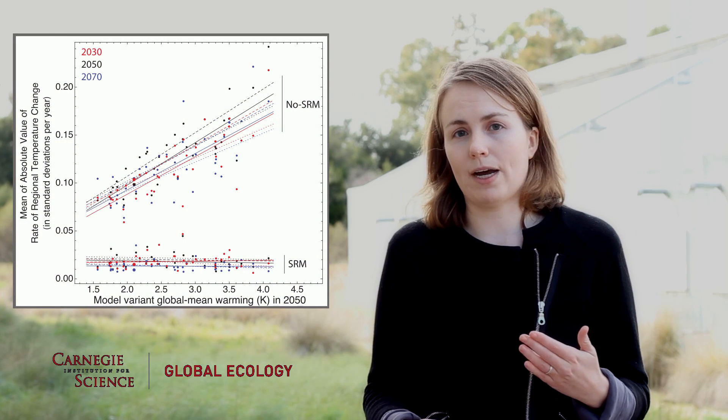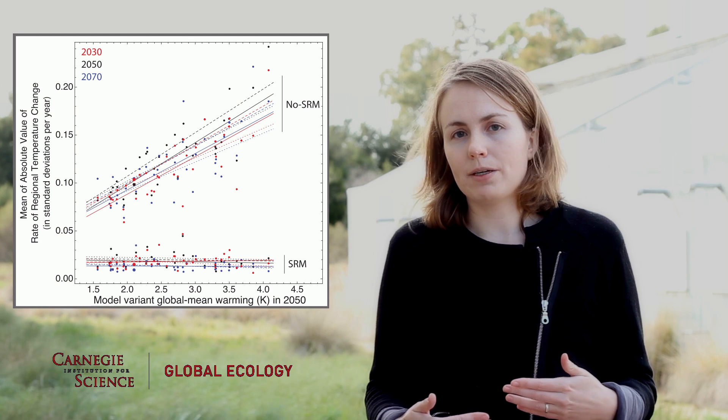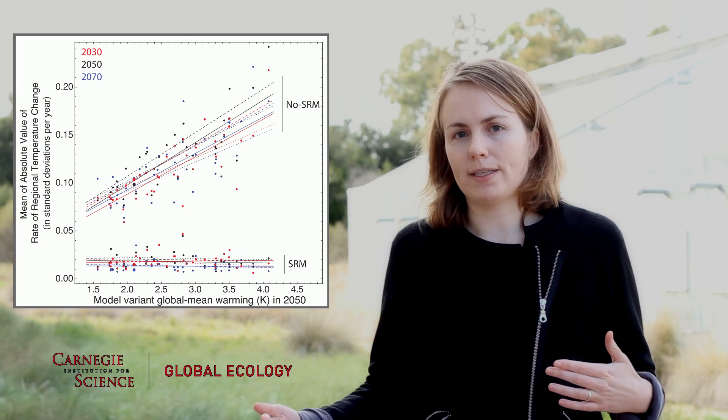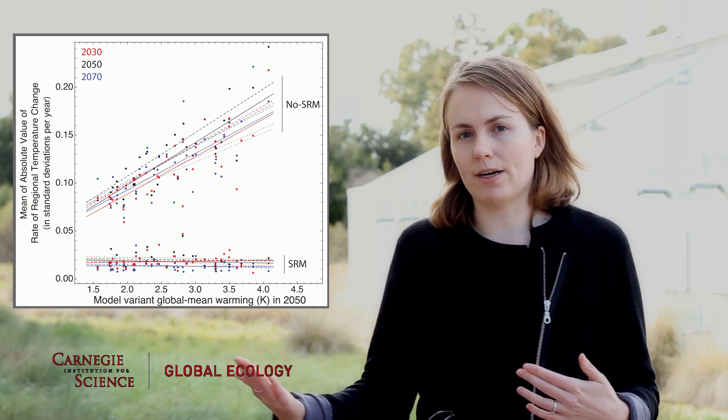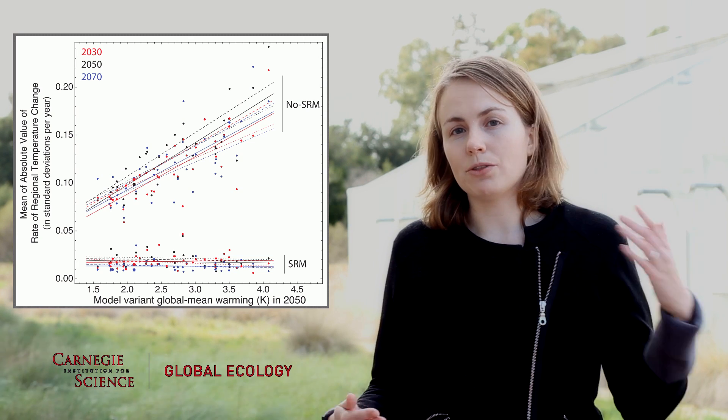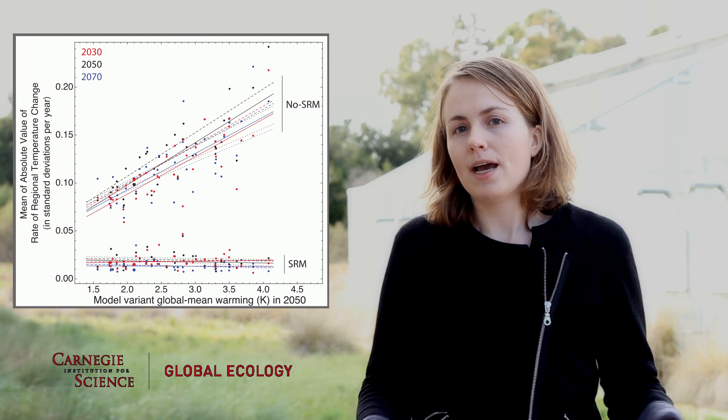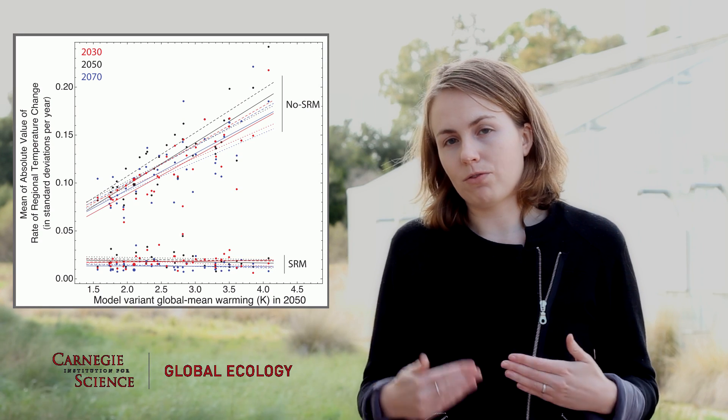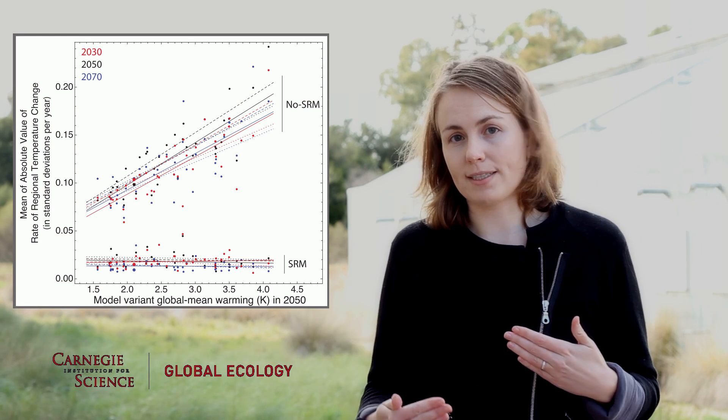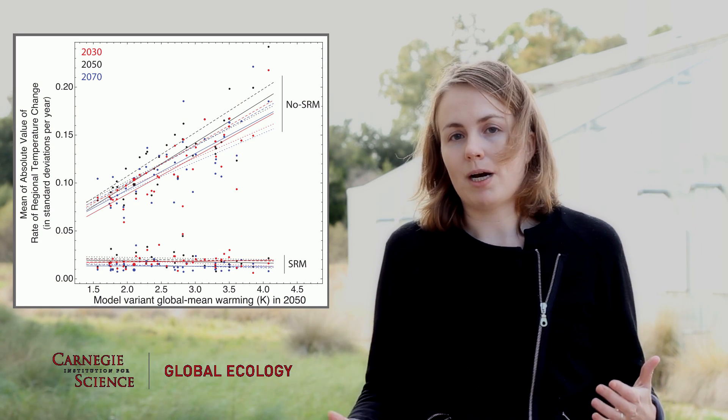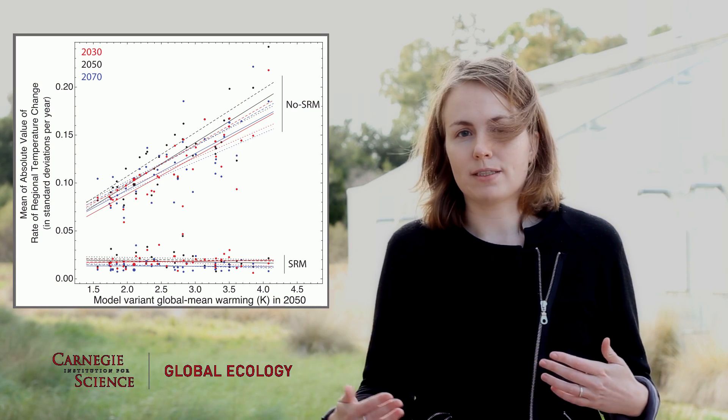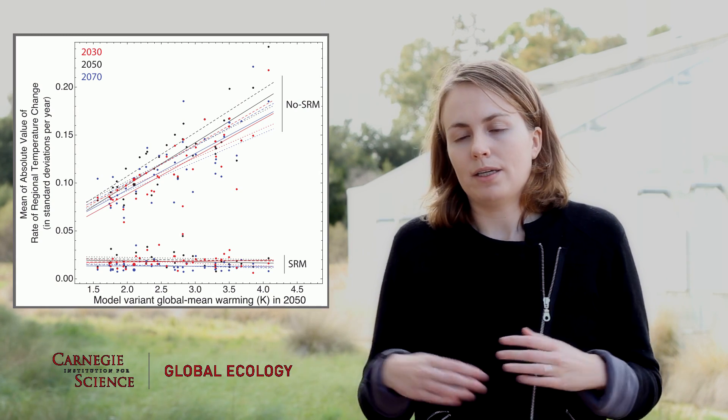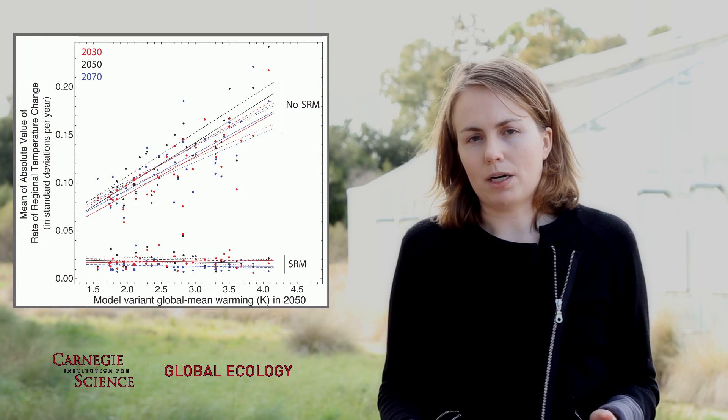We also found that SRM works equally well at any point in the simulation. So basically as greenhouse gases continue to rise in our simulation and we use more SRM to compensate, as long as we're canceling the forcings from greenhouse gases with SRM, at any point in the model you can reduce the regional rates of change equally well, independent of climate sensitivity of the model.